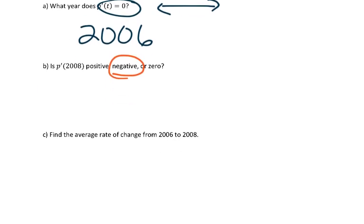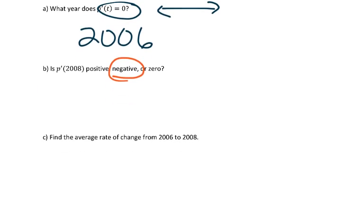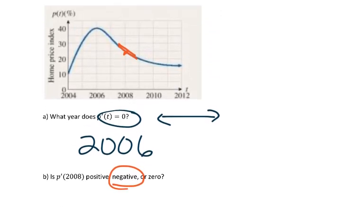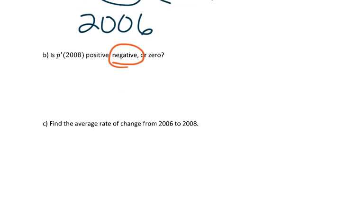Okay, last question here says, find the average rate of change from 2006 to 2008. So if I look at this graph here, let's see, 2006 gives me this point here. So 2006, the home price index is 40. So I'm going to write this down. So 2006, the home price index is 40.